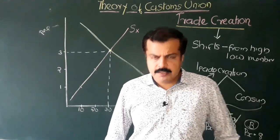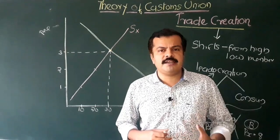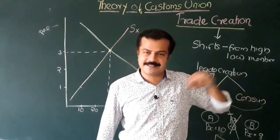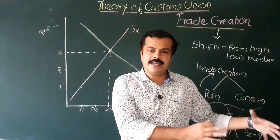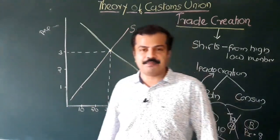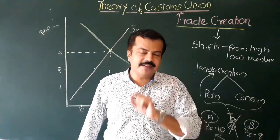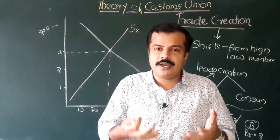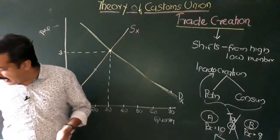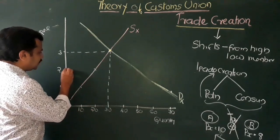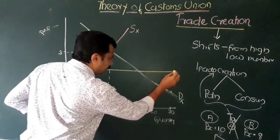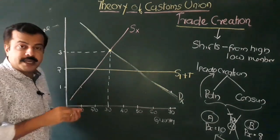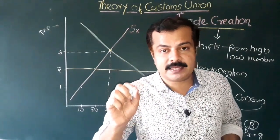Now let us suppose that this country forms some kind of trade relationship with the rest of the world — say Country One, which specializes in the production of commodity X. So we have a situation where Country One is willing to export commodity X to Country Two. But we will start with the case when this country imposes a tariff on commodity X. When tariff is included, this will be represented as S1 plus T — the tariff-inclusive, perfectly elastic supply curve of Country One.